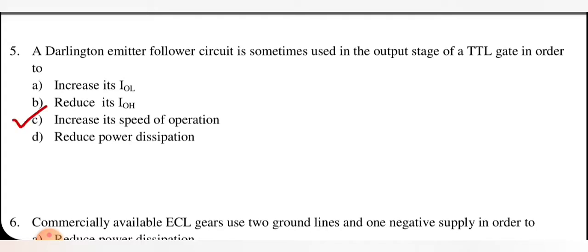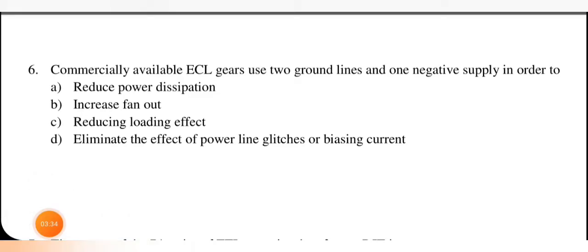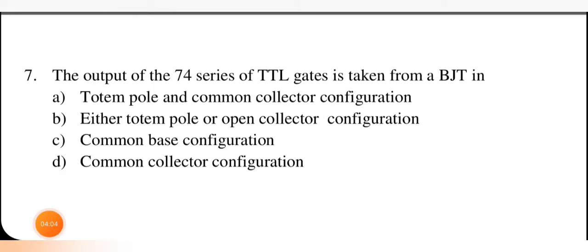Next question: commercially available ECL gates use 2 ground lines and 1 negative supply in order to — reduce power dissipation, increase fan out, reduce loading effect, or eliminate the effect of power line glitches or biasing current. The right answer is option D — eliminate the effect of power line glitches or biasing current.